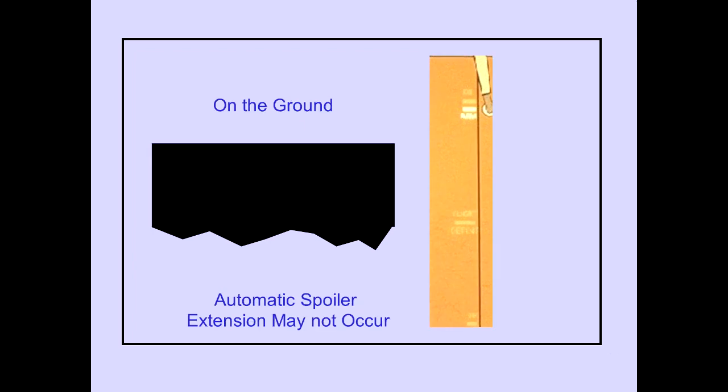On the ground, automatic spoiler extension may occur with the speed brake lever in the arm position. On the ground, automatic spoiler extension may not occur.